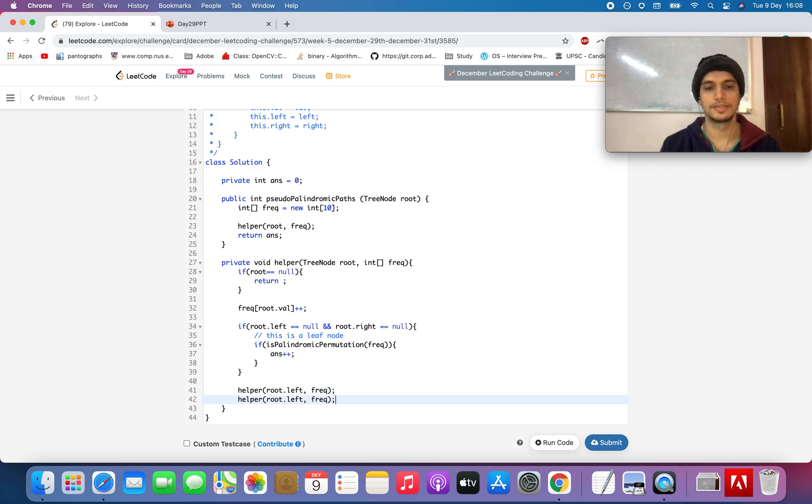And the right part of it using the frequency array. When we are done with one particular part in the bottom, we'll reduce the frequency because we are no more incorporating that node - standard way of what we do in backtracking.